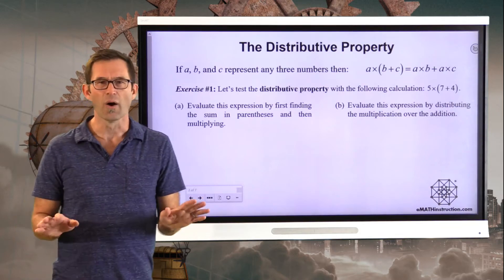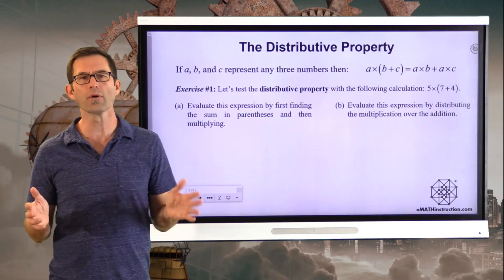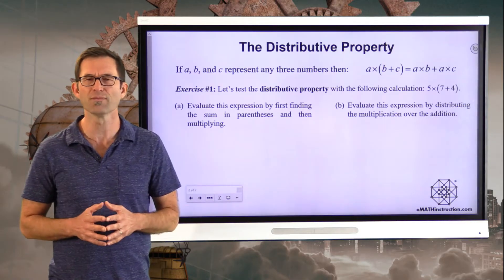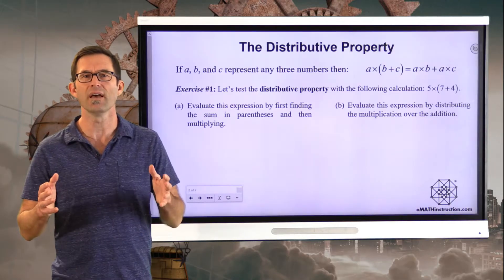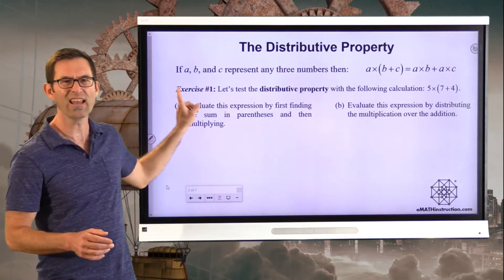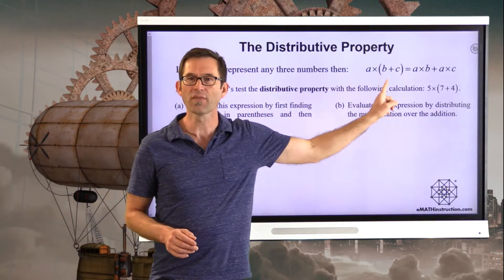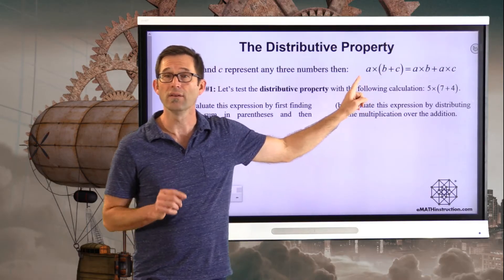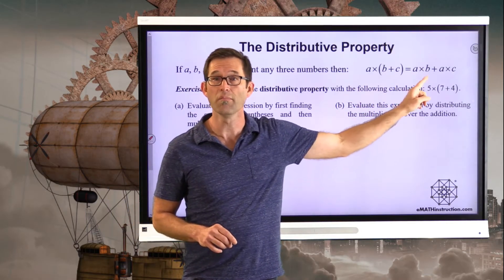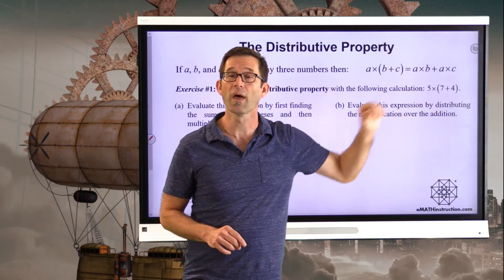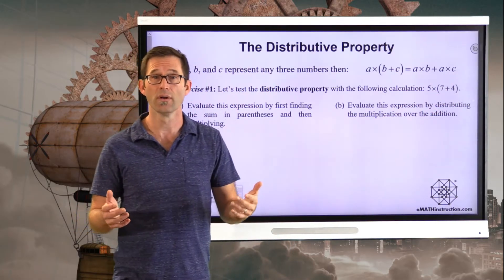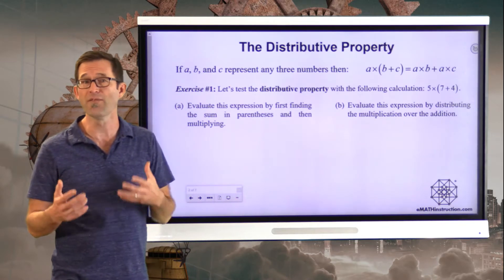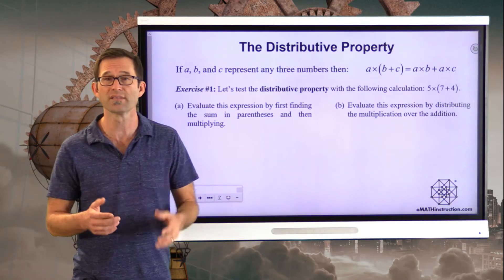Before we do that, we have to talk about one of the most important properties of real numbers, and it's called the distributive property. If A, B, and C represent any three numbers, then if I take the sum of B and C and multiply it by A, I can do that by actually multiplying B by A, multiplying C by A, and then adding them together. That's known as the distributive property. So let's take a look at the distributive property and verify it in exercise number one.